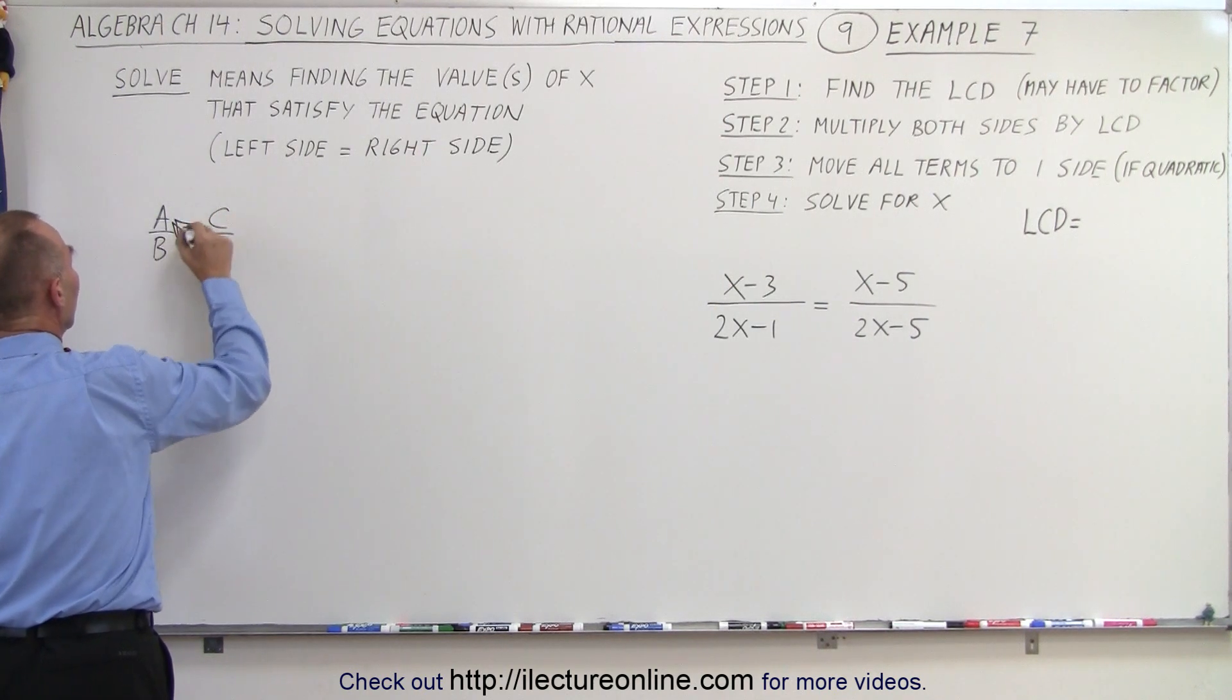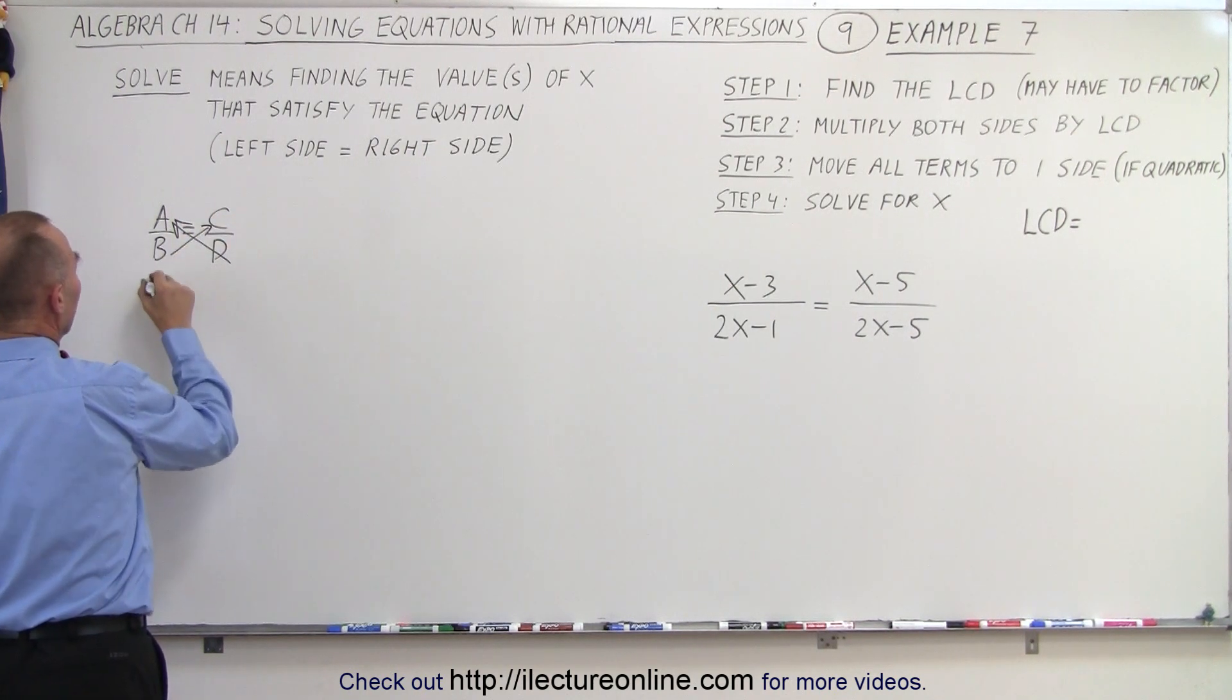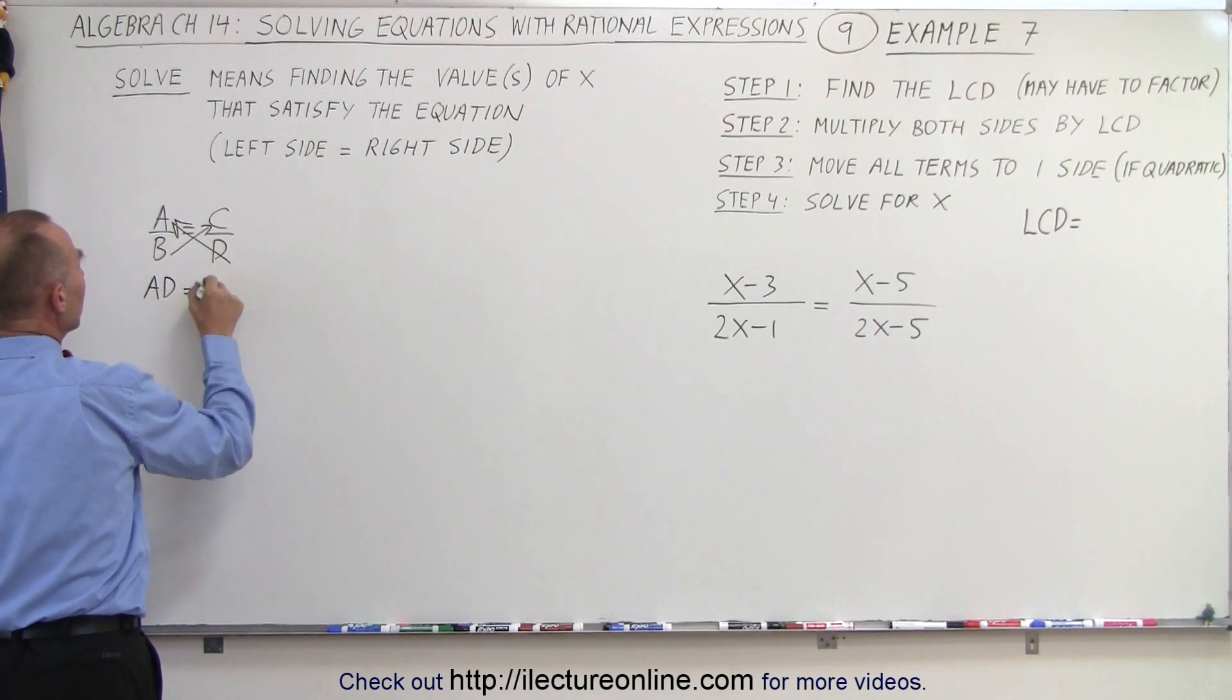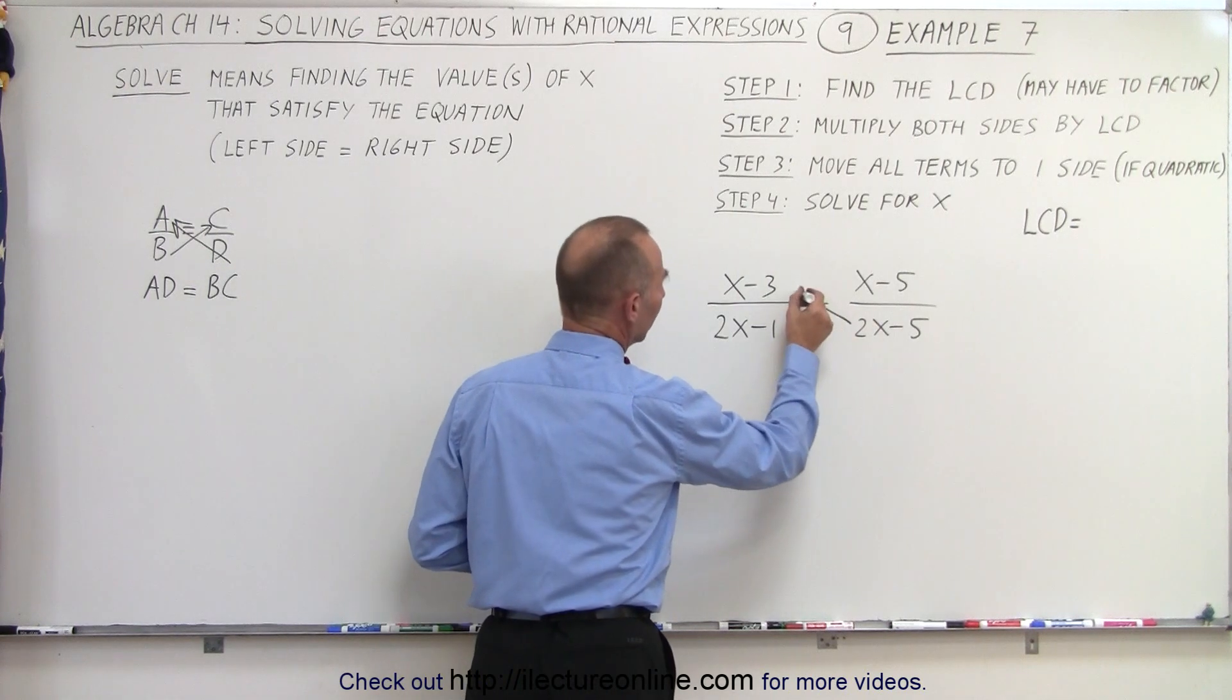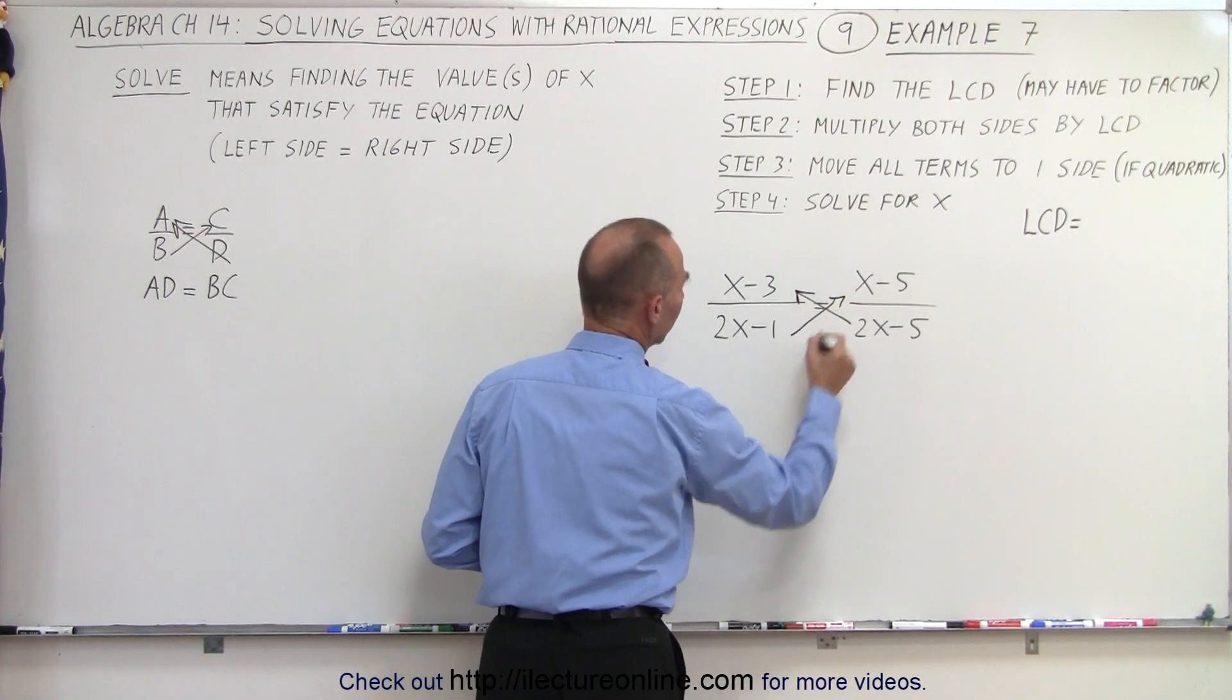We can cross multiply this way and this way, and write that a times d equals b times c. So we can do the same thing over here. We can multiply these two together, we can multiply those two together,